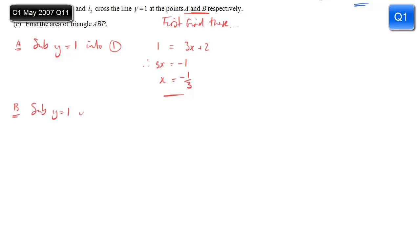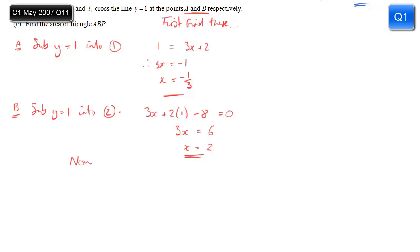We do the same for point B: substitute y equals 1 into equation 2. Equation 2 is 3x plus 2y minus 8 equals 0, so 3x plus 2 times 1 minus 8 equals 0. Adding 8 and subtracting 2 gives 3x equals 6, so dividing by 3 gives x equals 2. Those are the coordinates of points A and B.